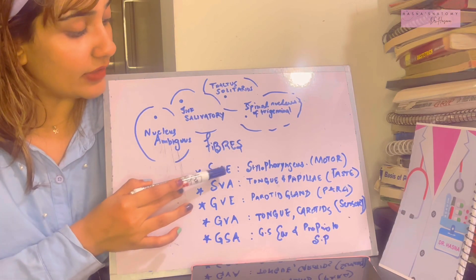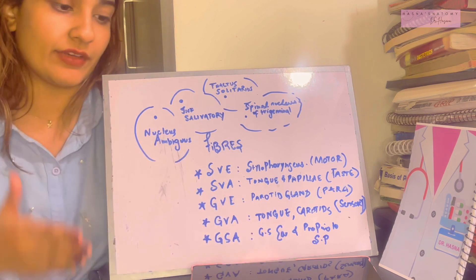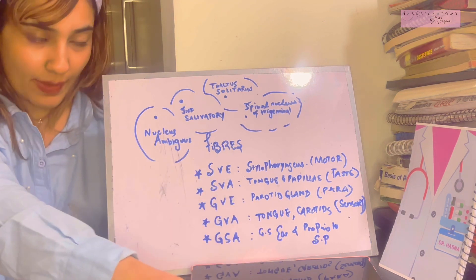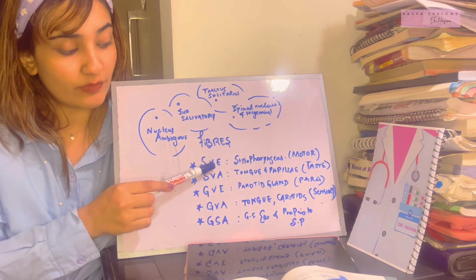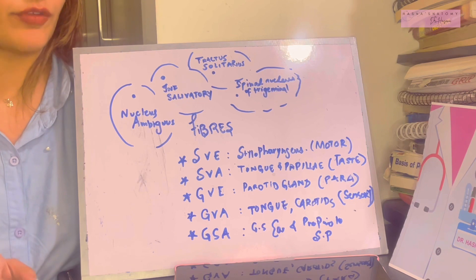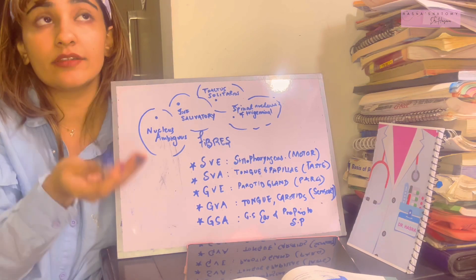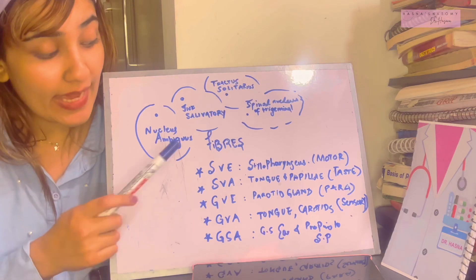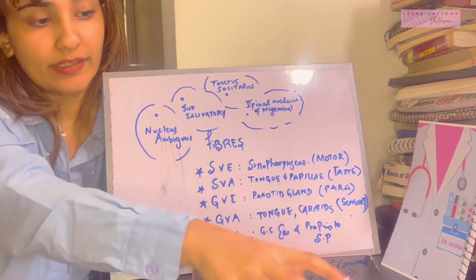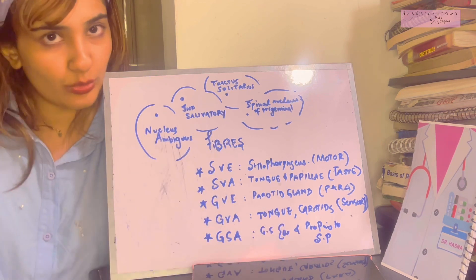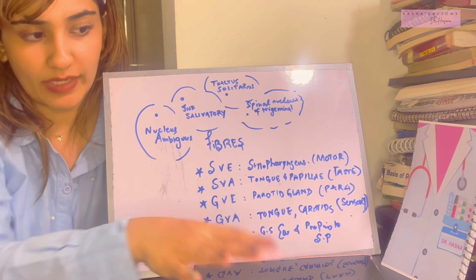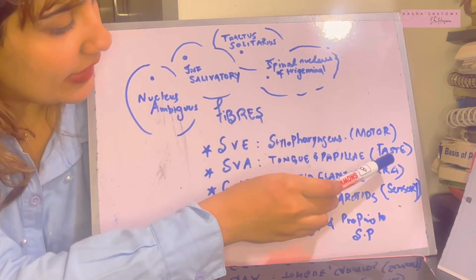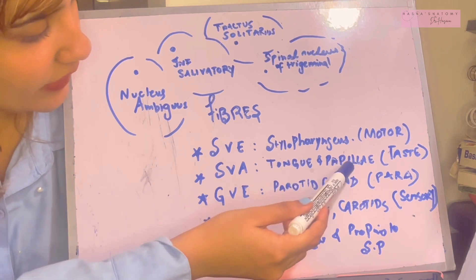The special visceral efferent fibers are the motor fibers of the glossopharyngeal nerve — 'efferent' means going somewhere to give supply. These supply the only muscle the ninth nerve innervates: the stylopharyngeus. The special visceral afferent fibers are afferent, meaning they take signals to the brain. These are the taste or gustatory fibers traveling from the posterior one-third of the tongue and the papillae.